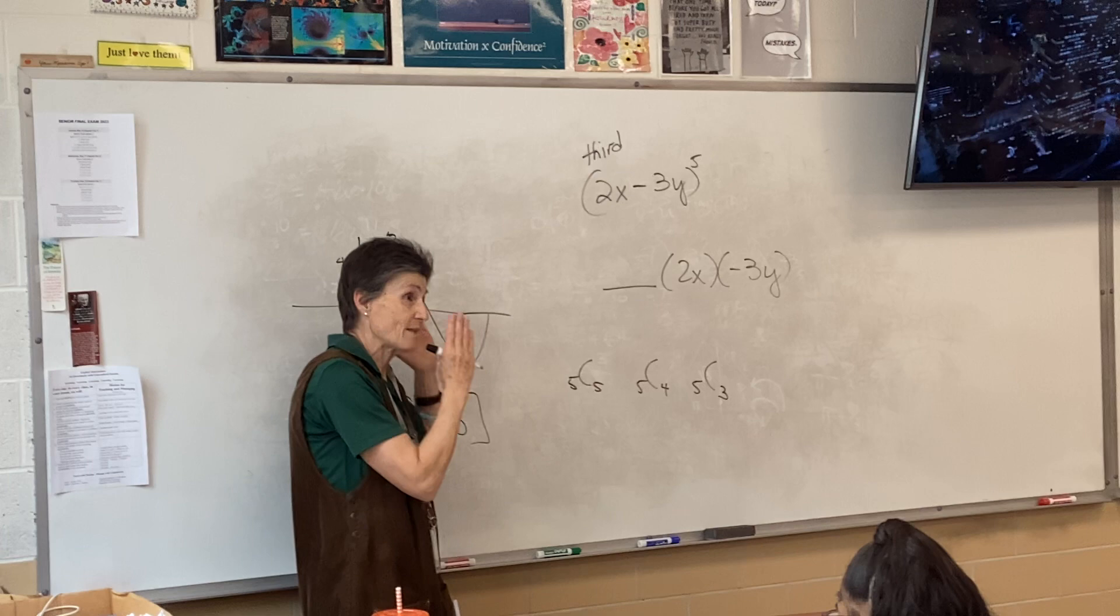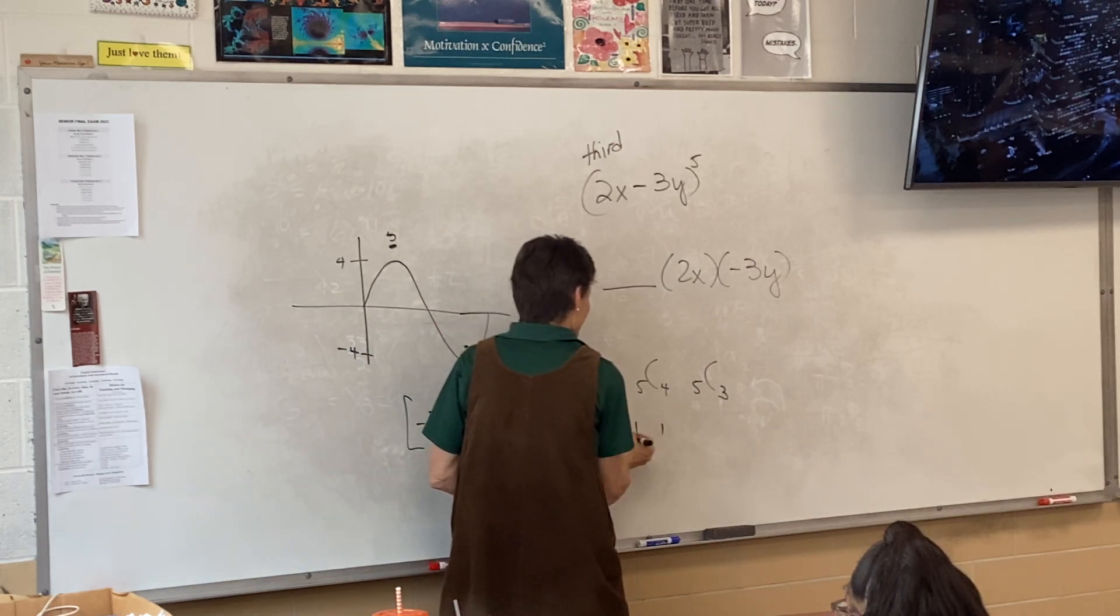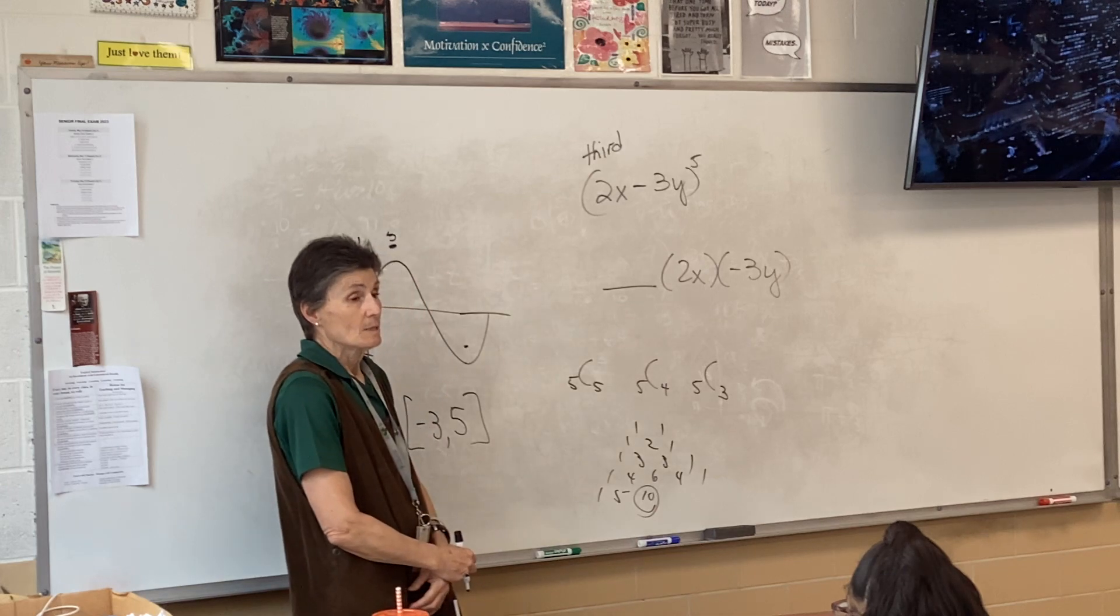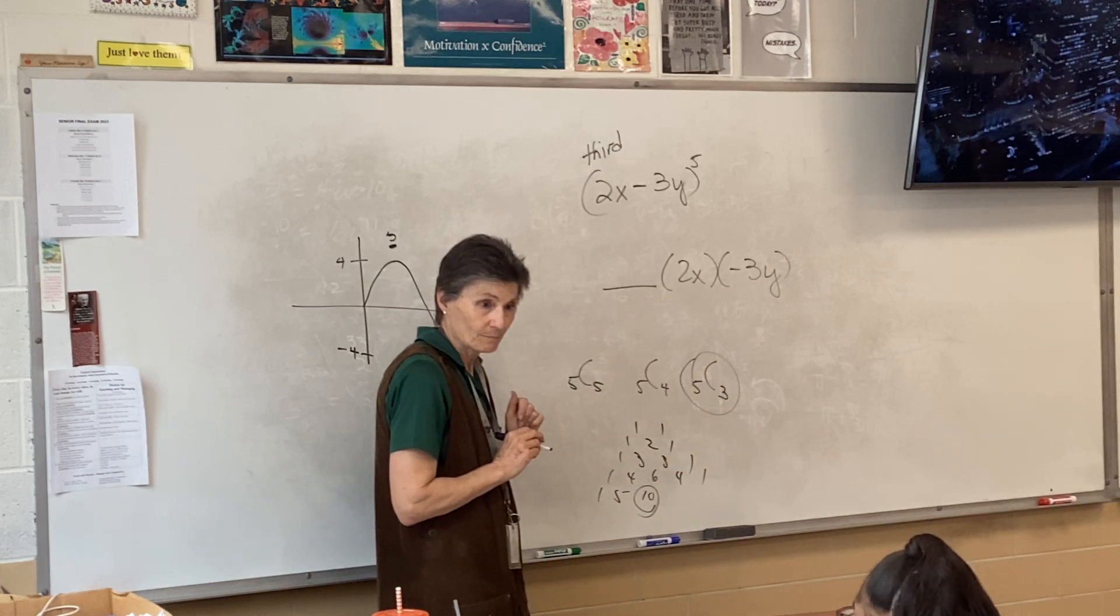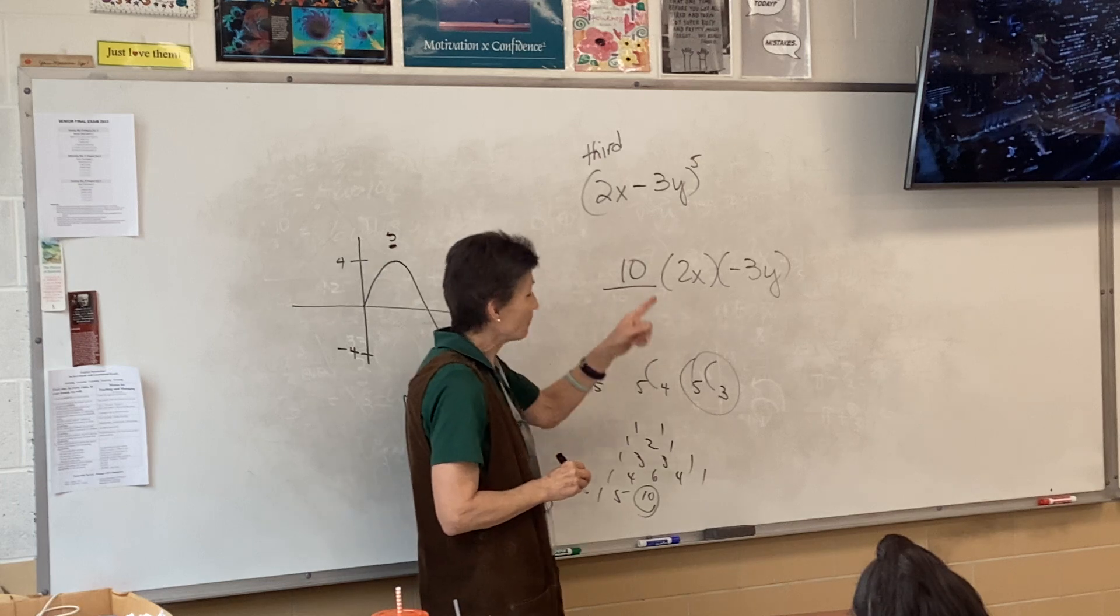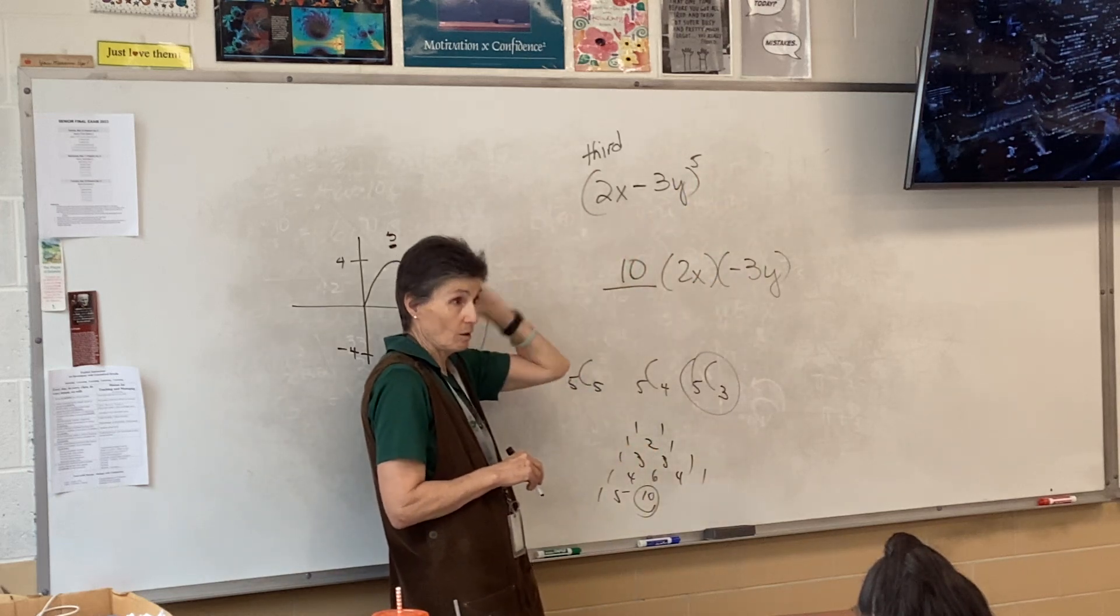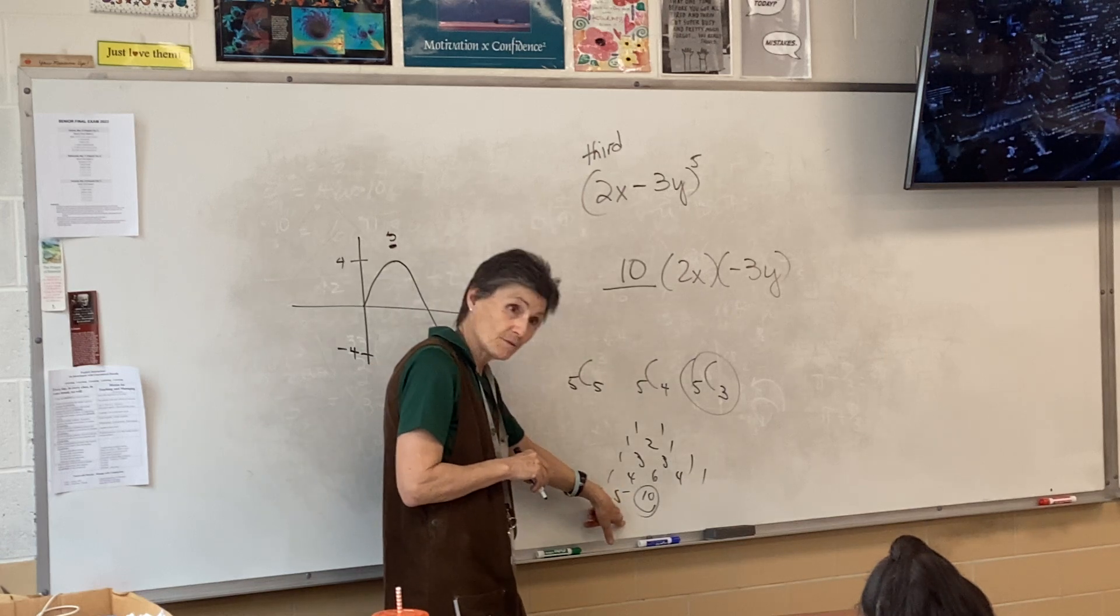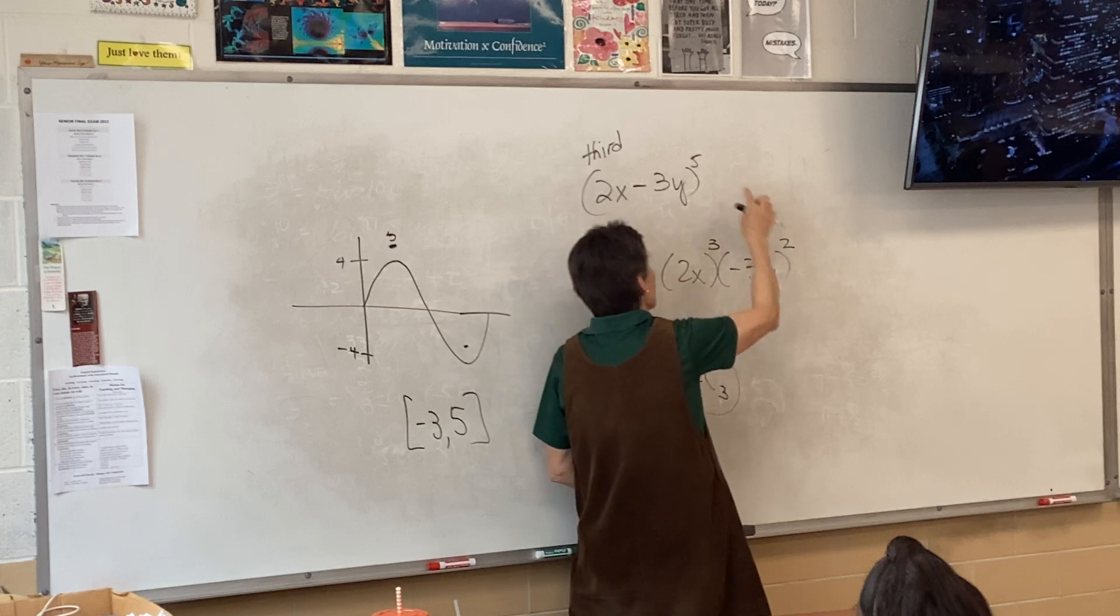You could do Pascal's triangle. When you build Pascal's triangle down to the fifth row, that would be the number you would want. If you do it this way, you're going to type in 5c3 on the calculator and it's going to say 10. That's your coefficient. Now I've got to put my x code on. This would be 2x to the fifth, fourth, third. This would be 2x to the third, which means that's a 2.